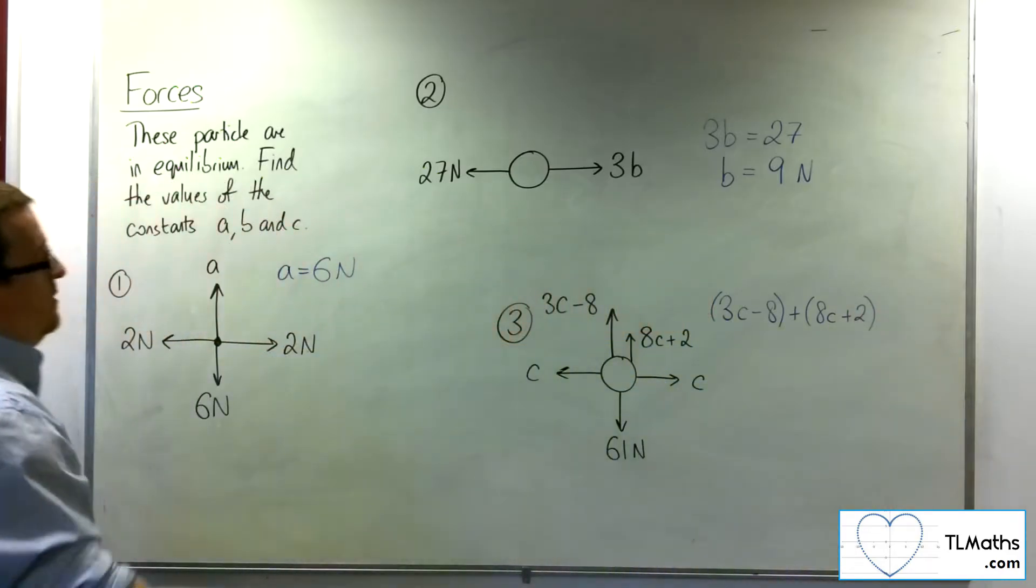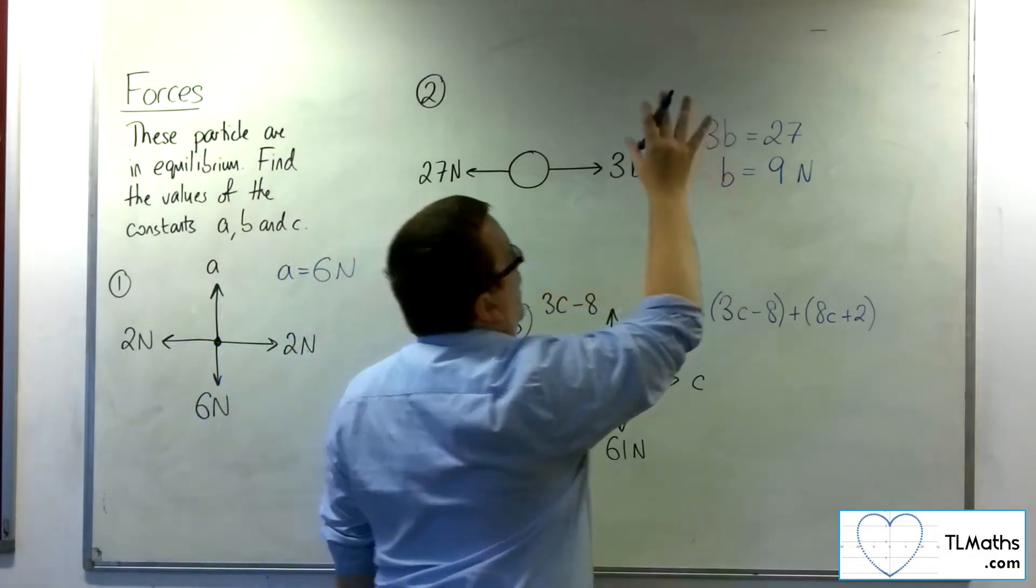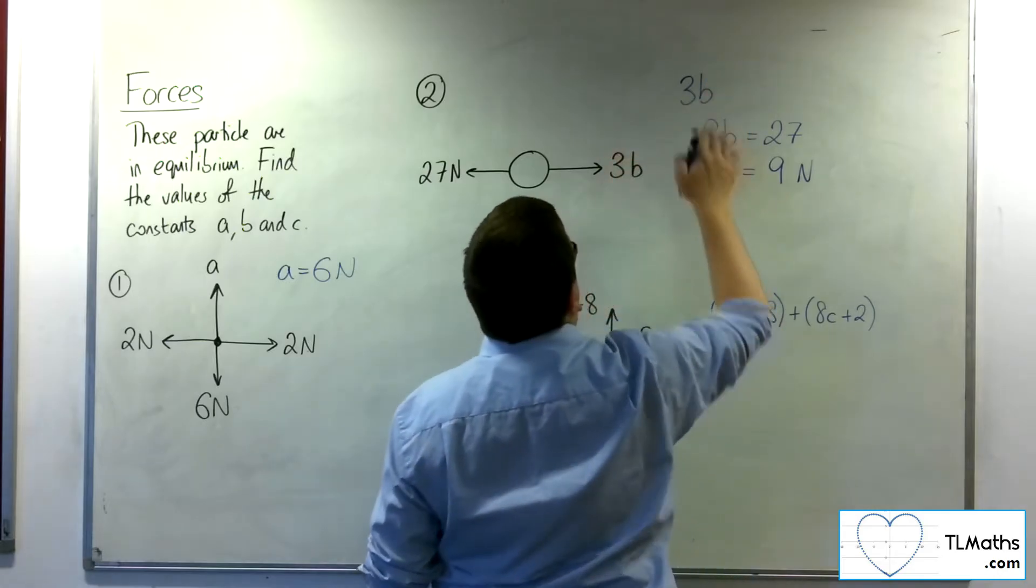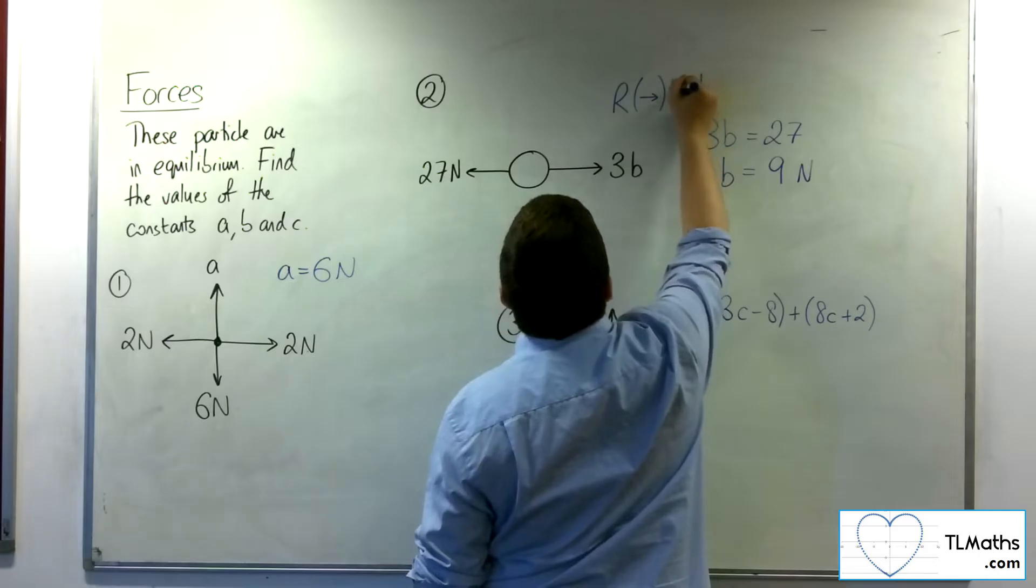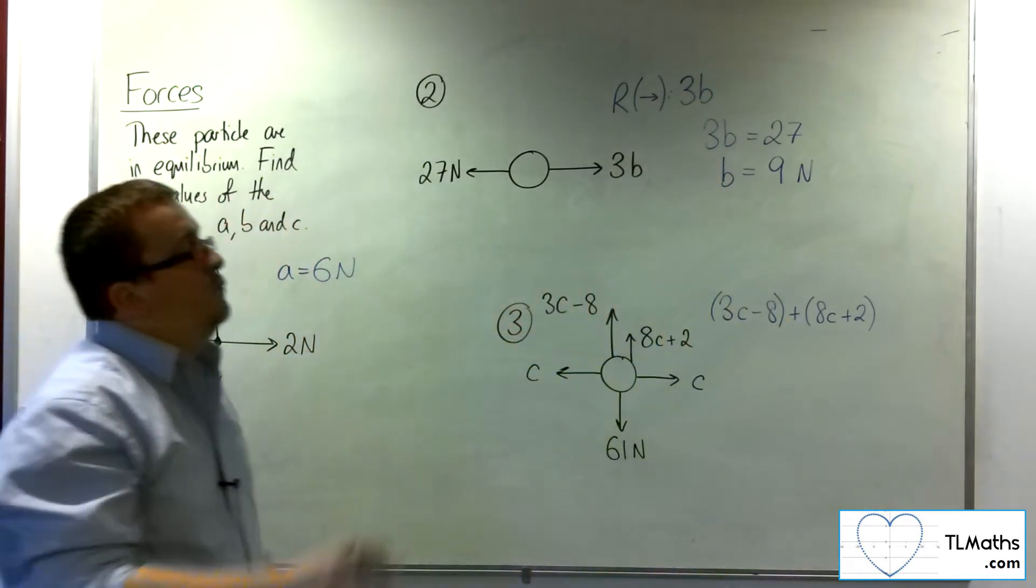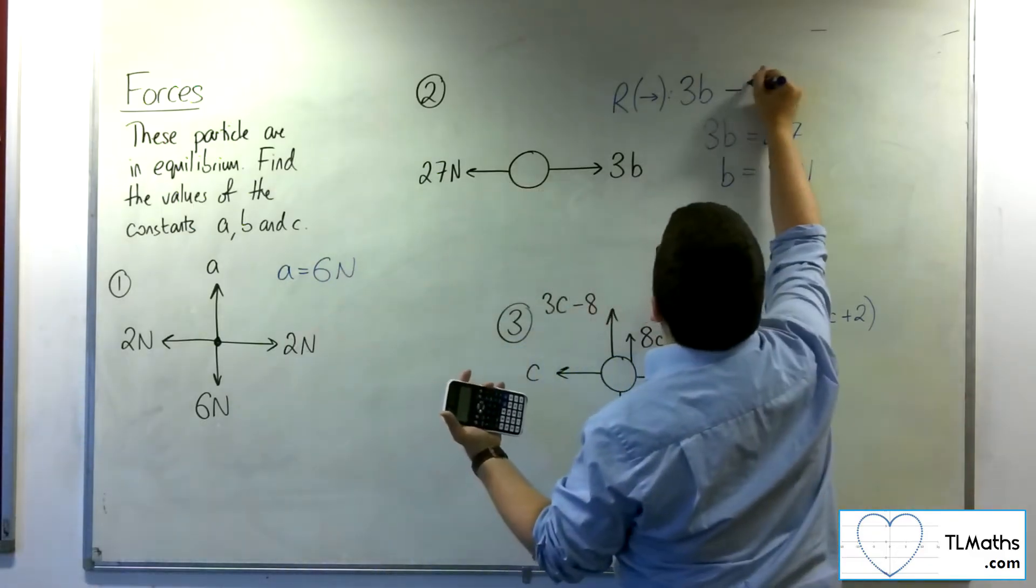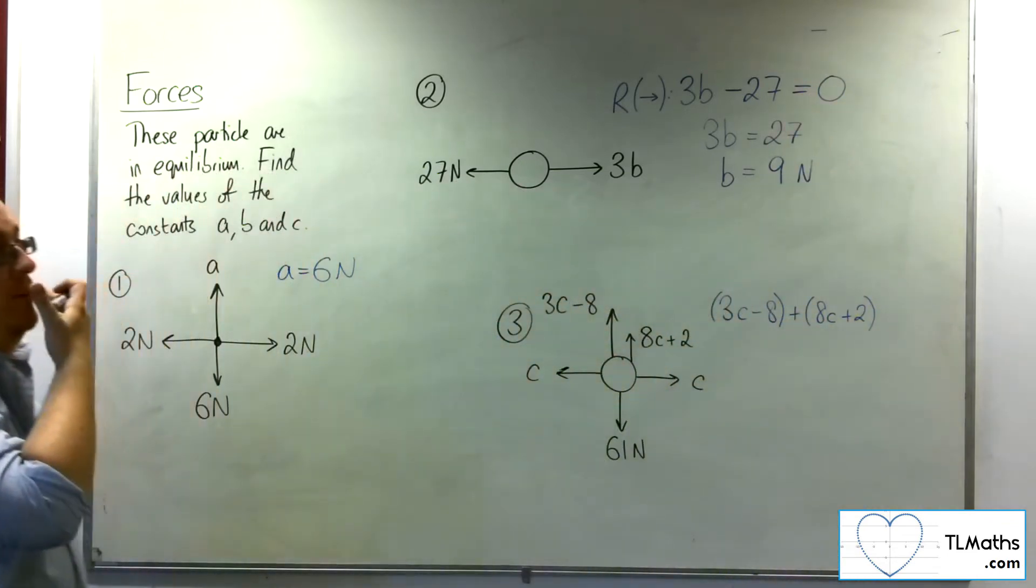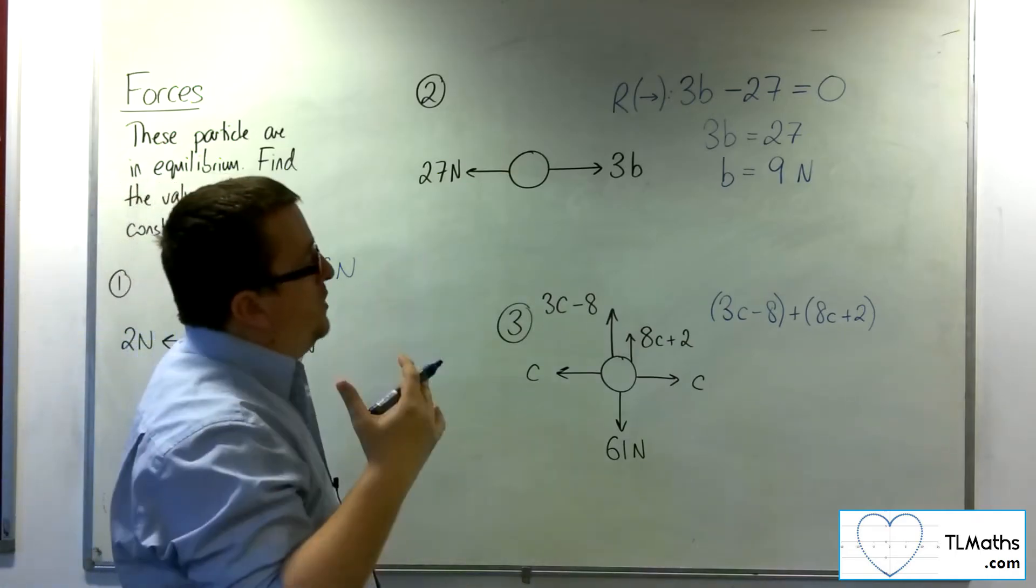Okay, now up here, I put 3b is equal to 27. I could easily also have put 3b if I take to the right as positive. So if I resolve to the right and I take that as positive, then I've got 3b working in that direction, 27 working in that direction, and it's in equilibrium, and so it's got to be equal to zero. The acceleration is zero. And so that gives me my equation there.